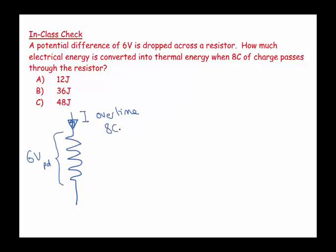coulombs, 8 coulombs of charge. So the current's flowing for a certain length of time, and in that length of time, 8 coulombs of charge passes through the resistor. And so when I think of coulombs